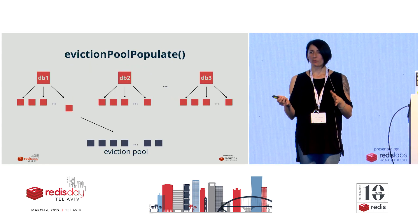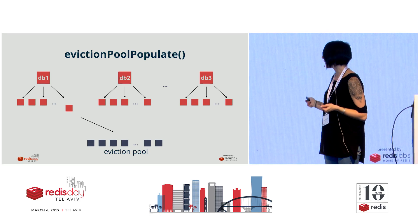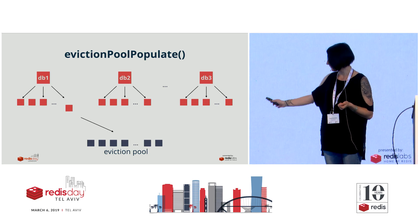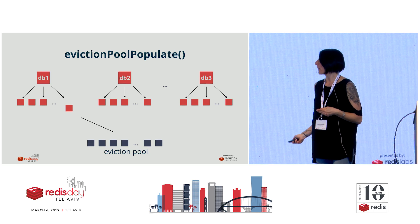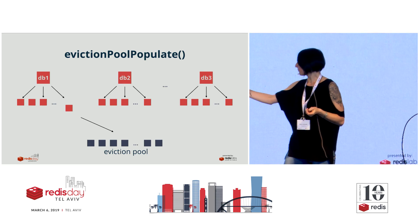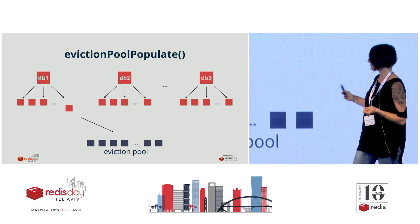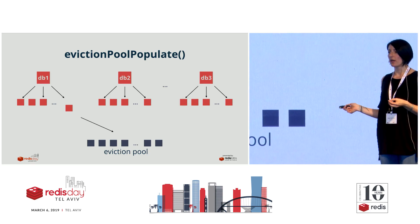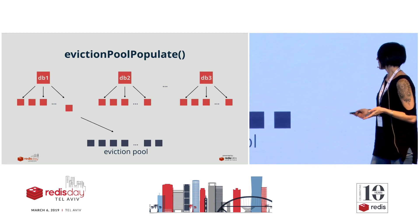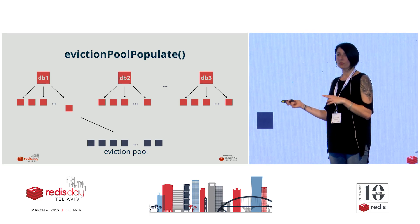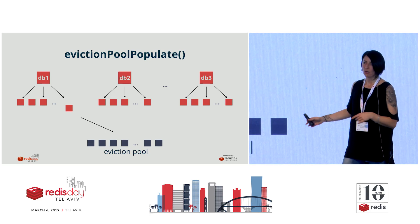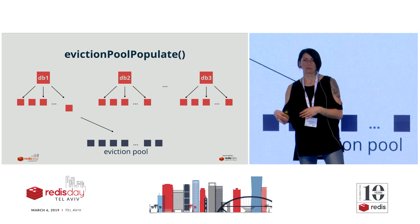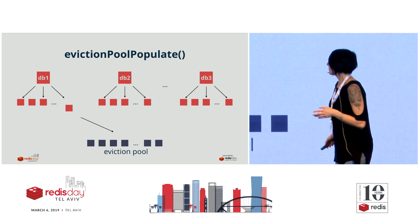That goes into the eviction pool. The eviction pool is a structure of 16 keys, ordered from left to right with the lowest idle time to the highest idle time - meaning keys towards the end are the best candidates to evict. For every key we get, we start comparing it from the first element towards the right. If it has a smaller idle time than any in the pool, it doesn't go in. If it gets in, we look at the other elements: if there's space to the right, we shift all elements right; if not, we shift all elements left and the last element drops out of the pool.